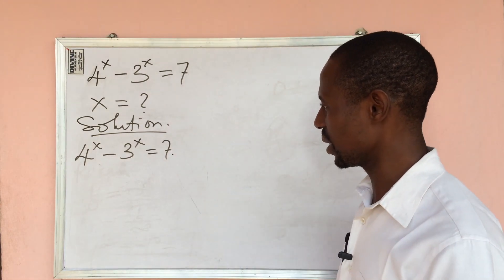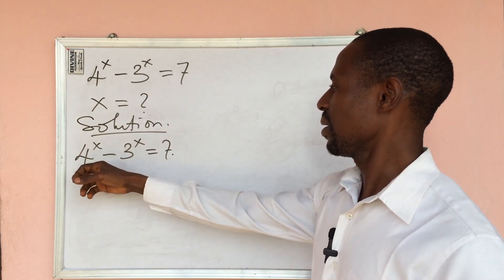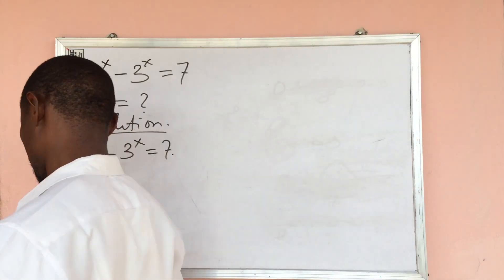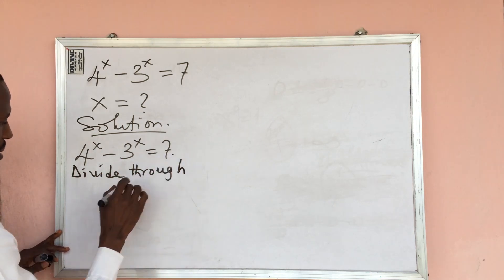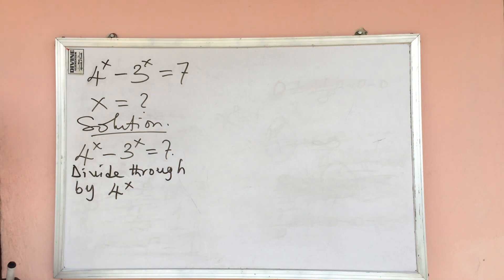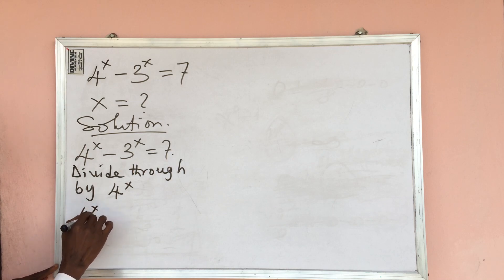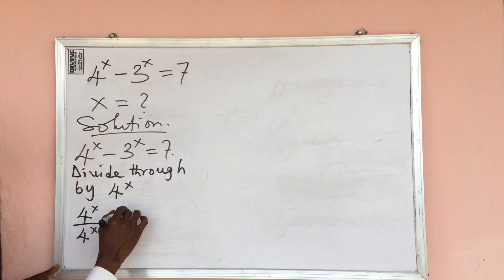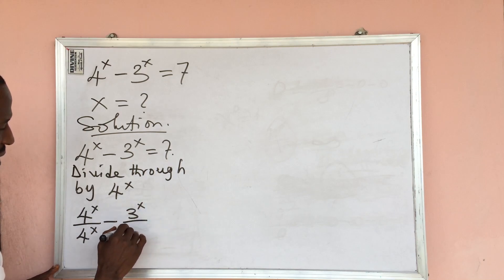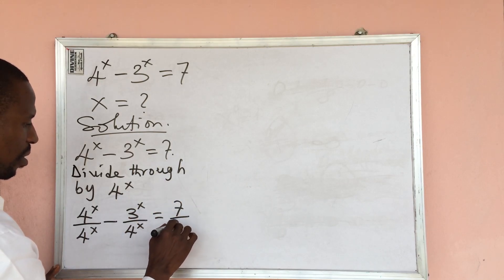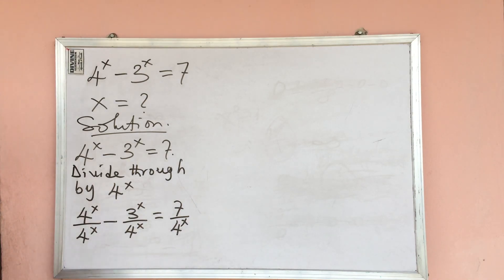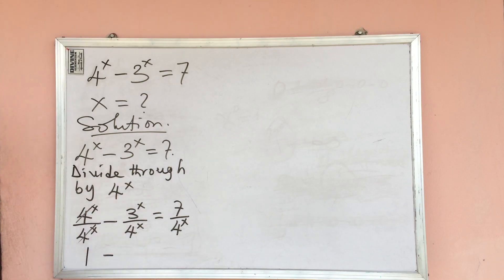Now if we look at this carefully, we divide through by 4 to the power of x. So we're going to have 4 to the power of x all over 4 to the power of x, minus 3 to the power of x all over 4 to the power of x, equals 7 all over 4 to the power of x. Of course, this will give us 1 on the left side.